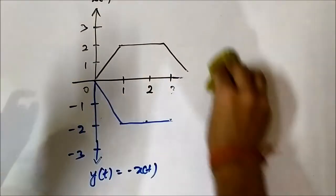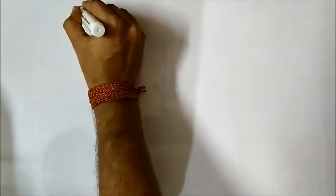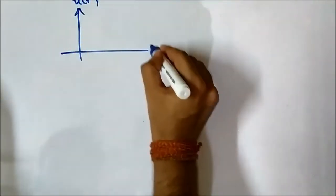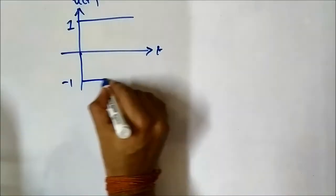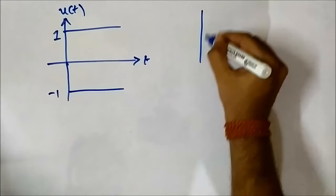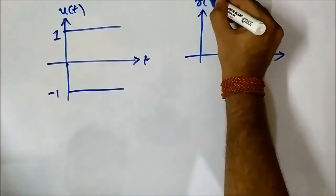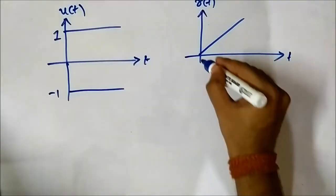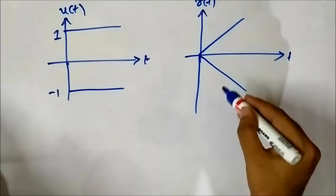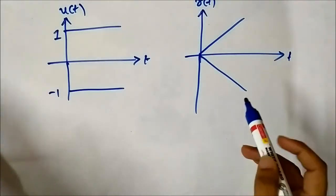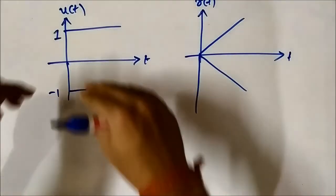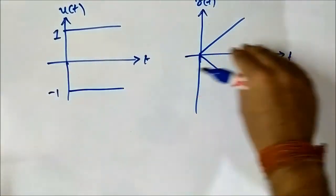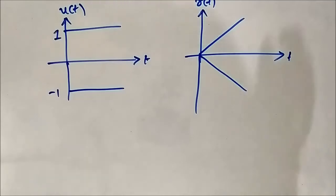Similarly for basic test signals: the unit step signal u(t), which is 1 for different values of t, will have amplitude inverted signal equal to minus 1. For the ramp signal r(t) = t, the amplitude inverted signal will be r(t) = -t. This is the whole concept of amplitude inversion — a mirror image with respect to the horizontal x-axis.